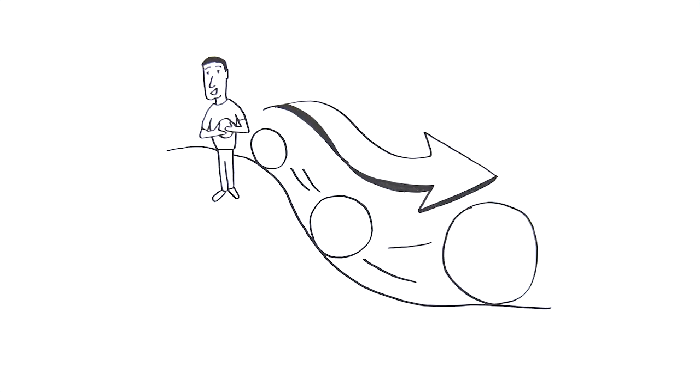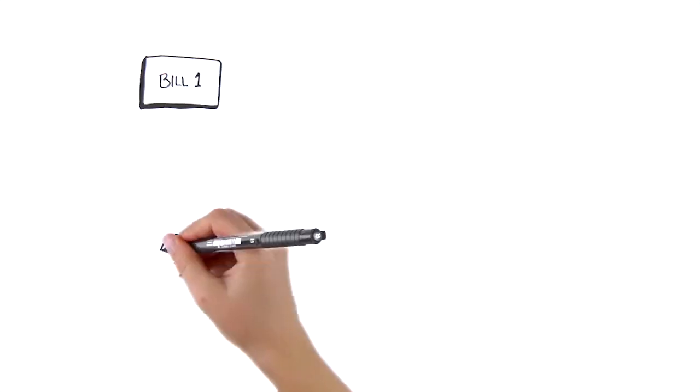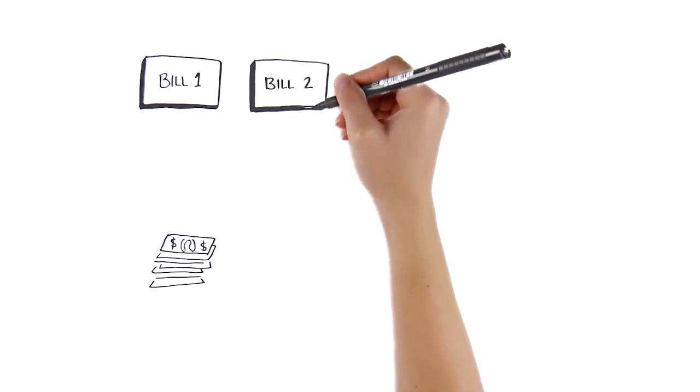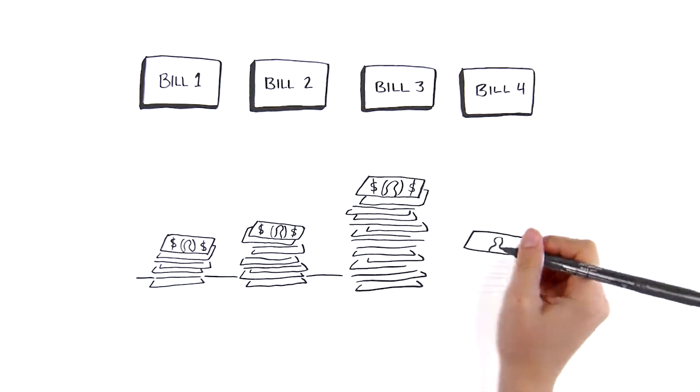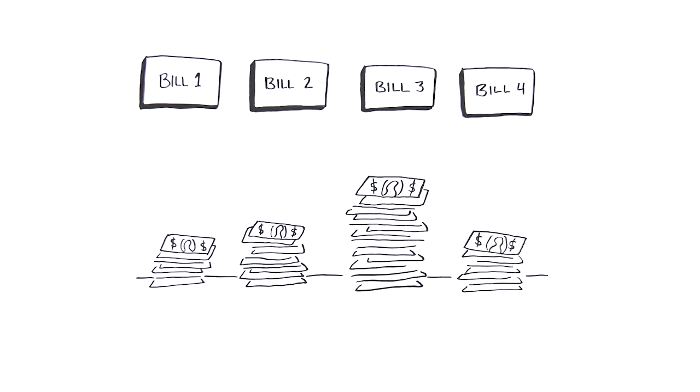Check your finance charges to see which of your accounts is costing you the most. Pay all of your creditors the minimum except the most expensive one. Pay that one all the extra money you pulled from your budget. Once that's paid off, roll that payment into the next most expensive account.